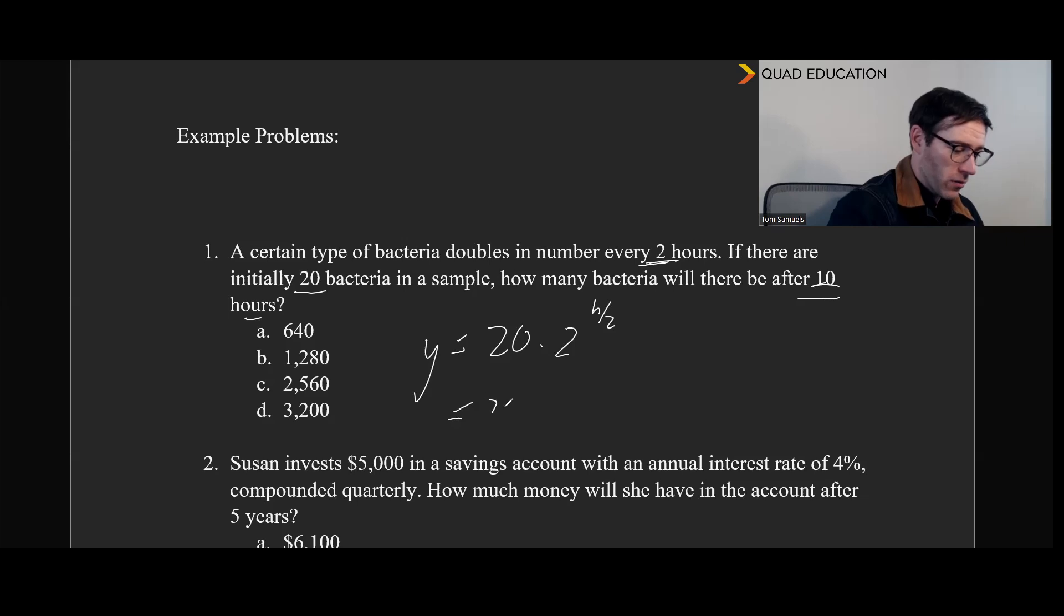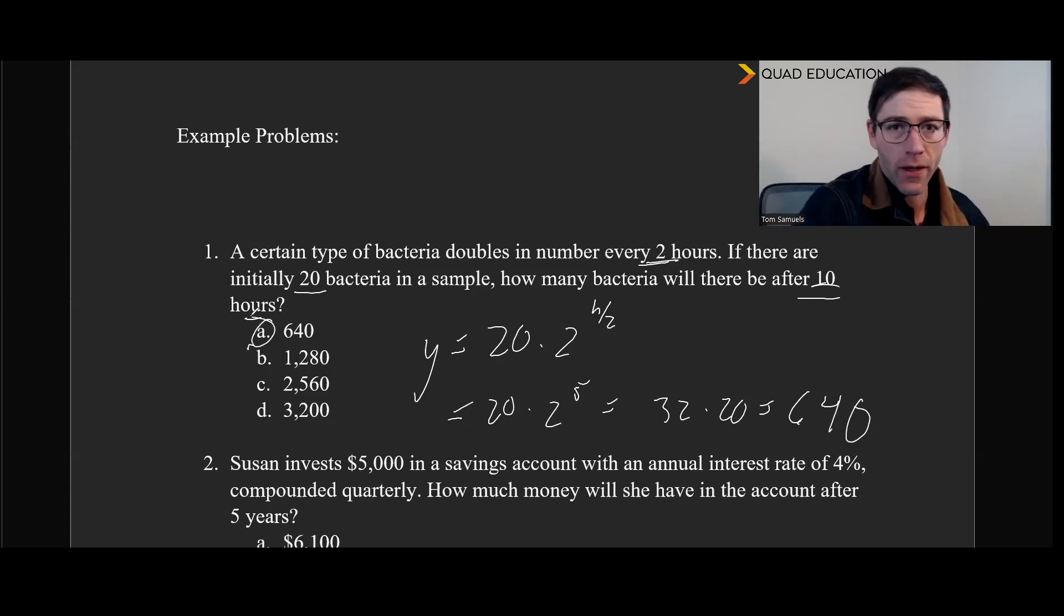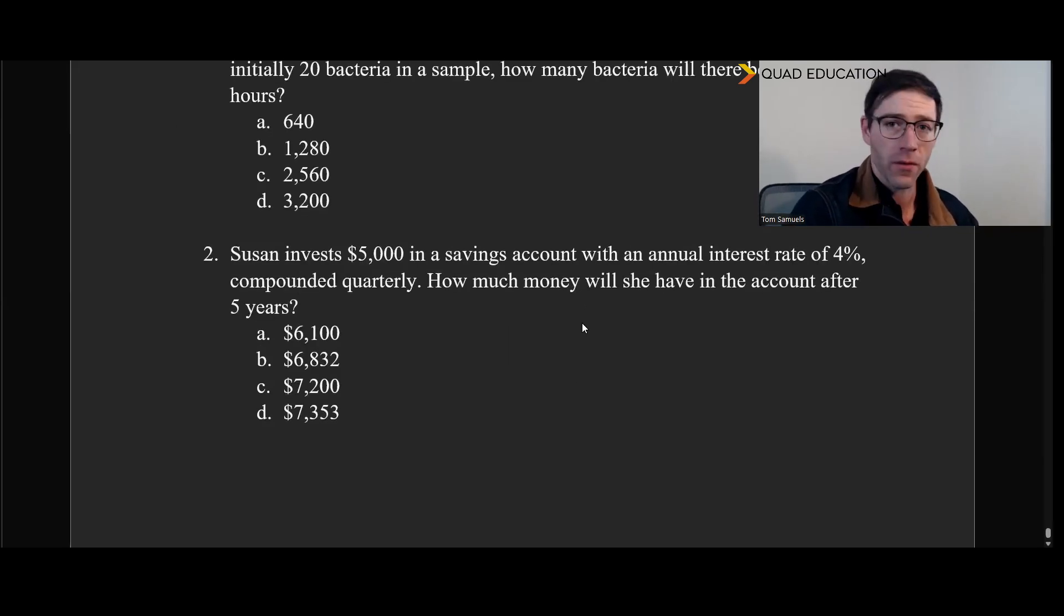That would be 20 times 2 to the 10 over 2, which is 5. And 2 to the 5 is 2, 4, 8, 16, 32. And so that's 32 times 20, which is 64 with a 0. And we see there that 640 is our answer. So pretty straightforward. All right, next question here. See what you can do with this one.